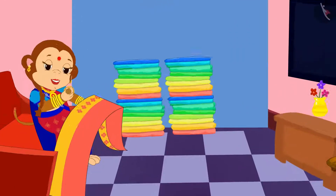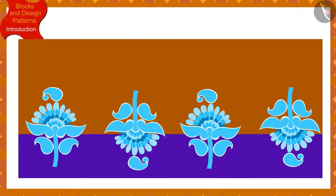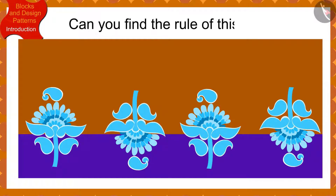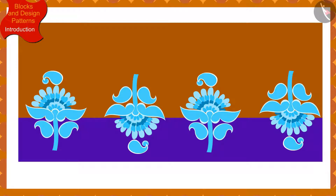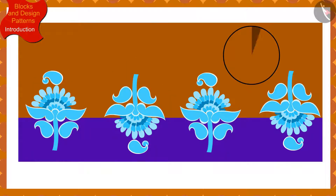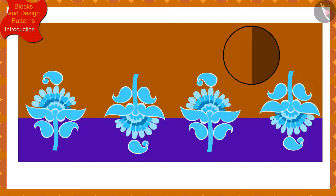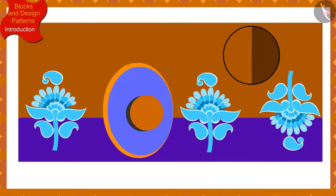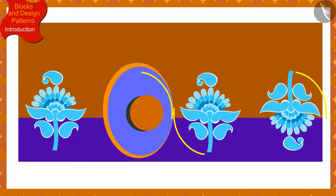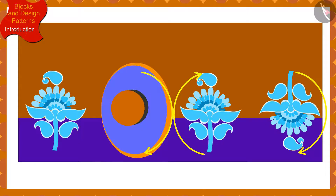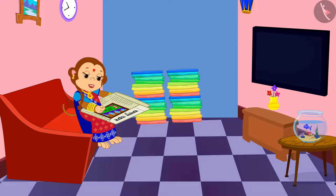Children, if Banno has made such a design on one of the sarees, can you find the rule of this pattern? If you wish to, you may stop the video and think of the answer. If we look closely, we will find that this impression has been made by rotating the previous impression by half in the clockwise direction. In order to create this pattern, Banno has rotated the block of the design by half in the clockwise direction each time.